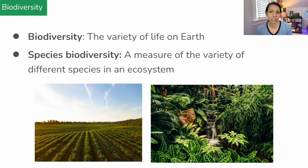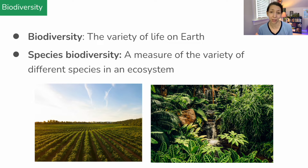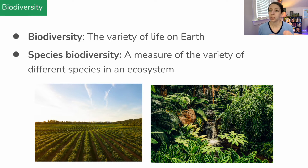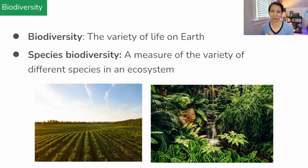Biodiversity in general is just the variety of life on earth. There are countless species on this planet, and so many we have not yet discovered. A lot of times when we talk about biodiversity, we're talking about species biodiversity, which is a measure of the variety of different species in an ecosystem. An ecosystem with very few different species has low biodiversity, and one with many different species has high biodiversity.